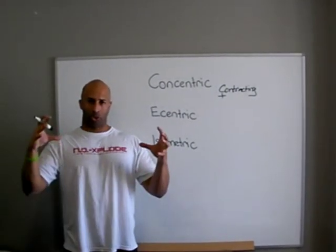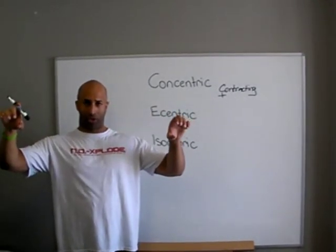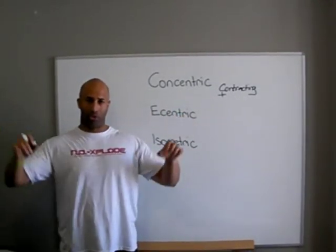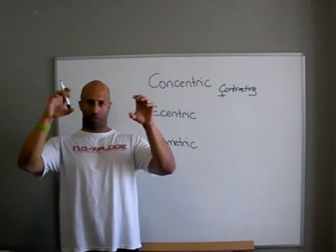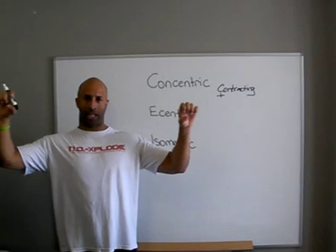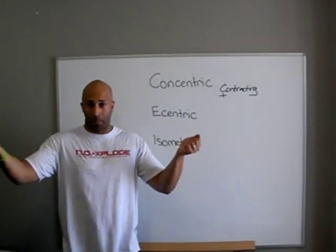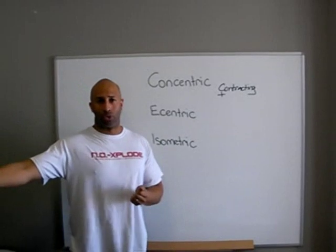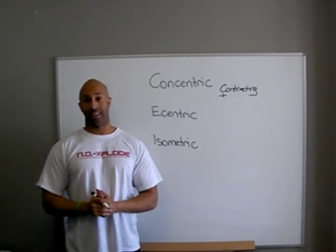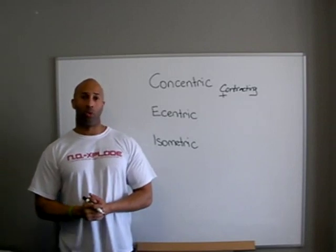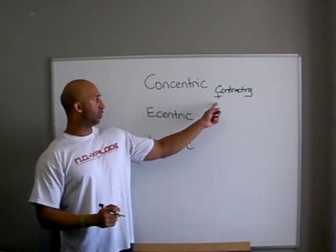When the muscle tissue shortens, the tendons that the muscle tissue is attached to are also attached to bones. So you've got the belly of your muscle tissue, tendons on both sides, and those tendons are attached to bones. When the muscle tissue shortens, it pulls on the tendons and it pulls on the bones. Muscle tissue doesn't pull two bones together — it pulls one bone towards another bone.